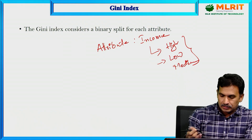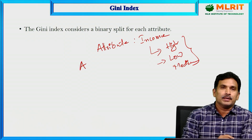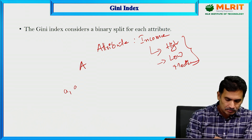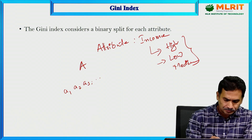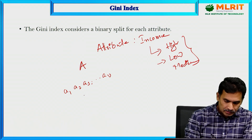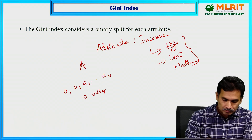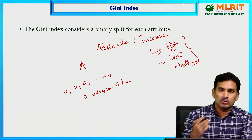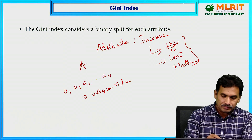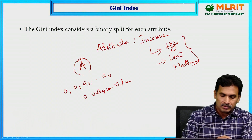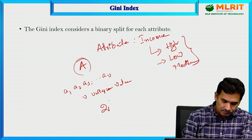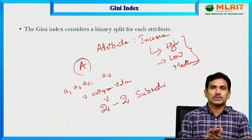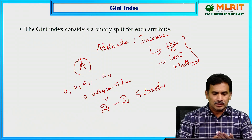Take attribute A with a set of possible values A1, A2, A3, ..., AV — meaning there are V unique values. The income attribute has three unique values: high, low, and medium. If attribute A has V unique values, then 2 to the power of V minus 2 subsets would be used to calculate the Gini indexes.